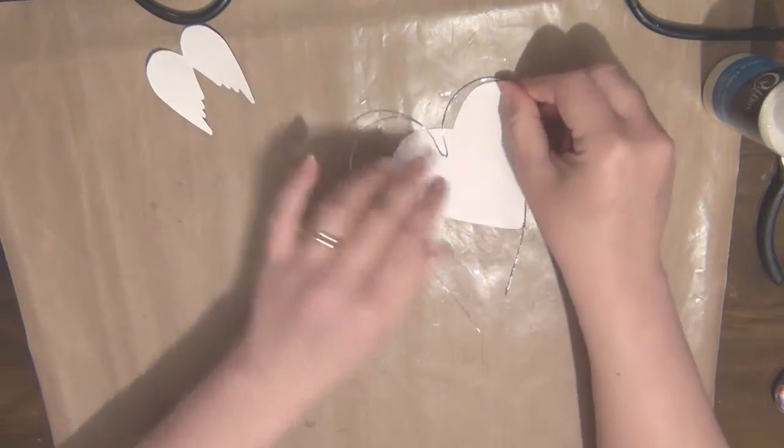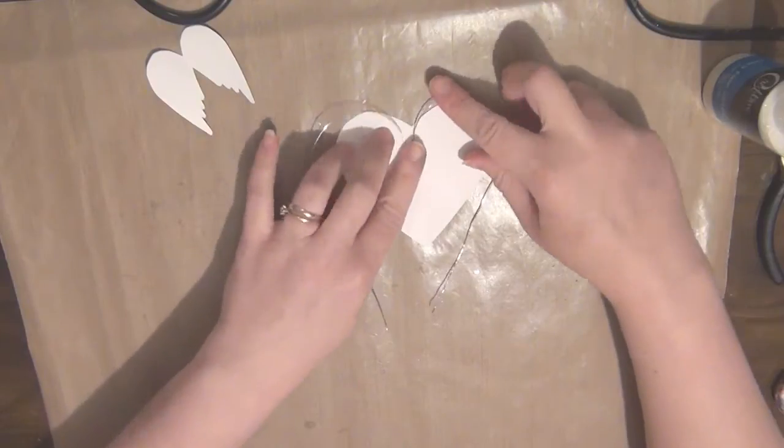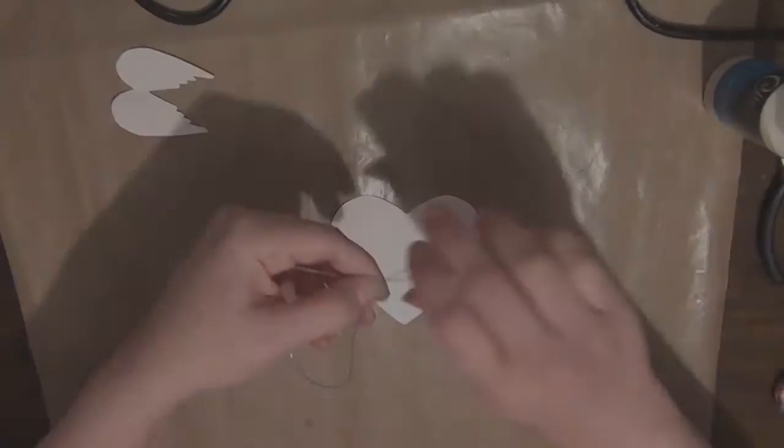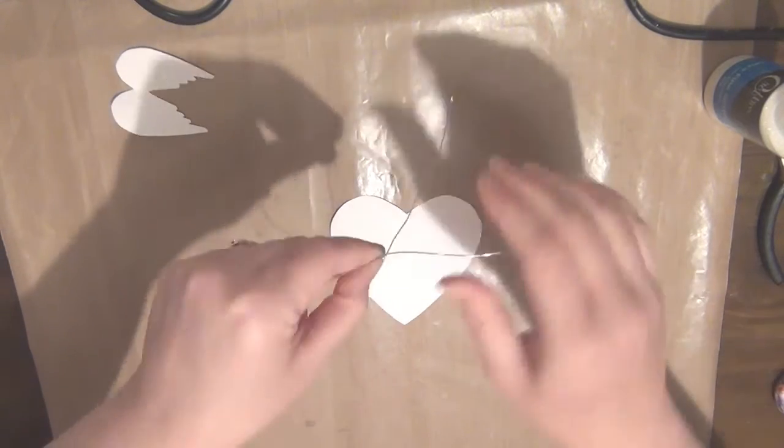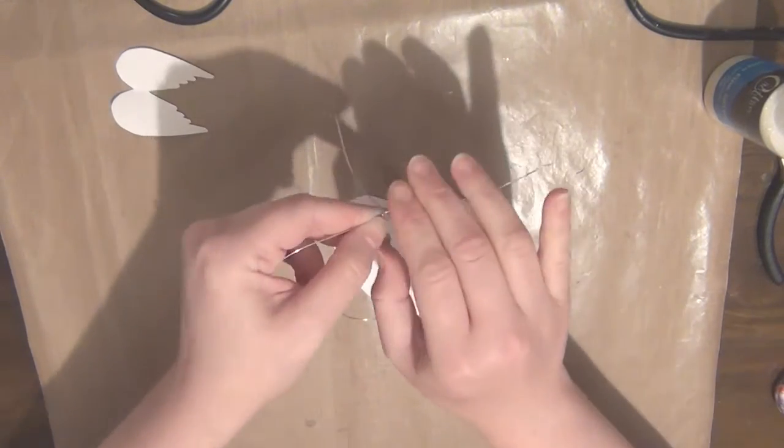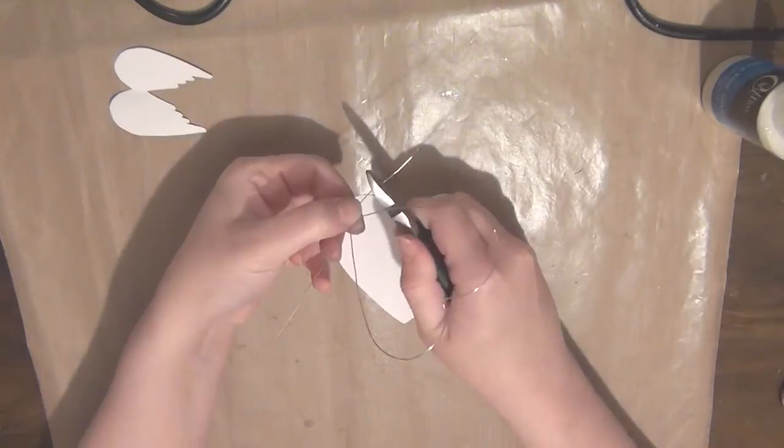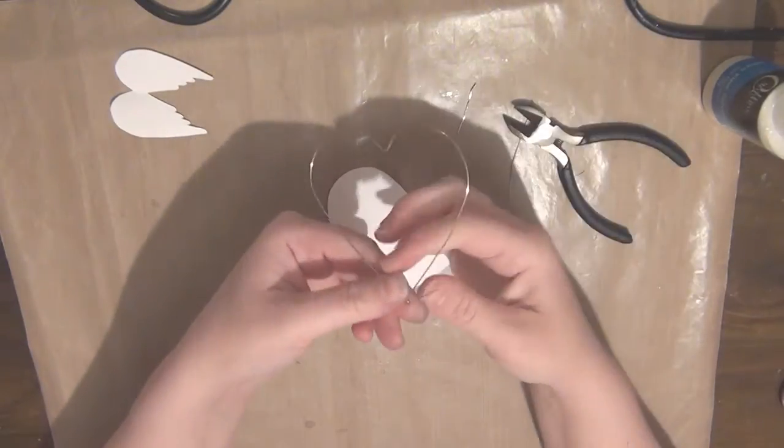You pretty much have your heart shape here. I just wanted to shape this around my template just because I want it to fit on a card that I'm making. Once I finish doing that, I'll just wrap the ends together, trim off any excess of the wire, and make sure you wrap it really neatly so the wire doesn't show.